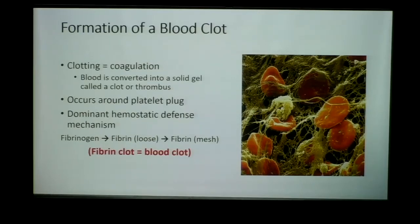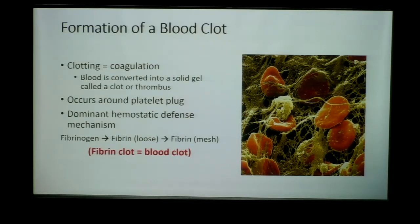The third part of this process is formation of a blood clot, also called a thrombus. This is really coagulation of the blood. The blood that settles in that region begins to form this semi-solid, jelly-like substance — that is called a clot or a thrombus. This occurs around the area where we had platelet aggregation.